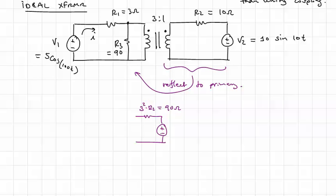So in this case, because there's more turns on the primary than on the secondary, therefore the voltage V2 when reflected back to the primary will be larger. It will be 3 times the 10 volts sine 10t.